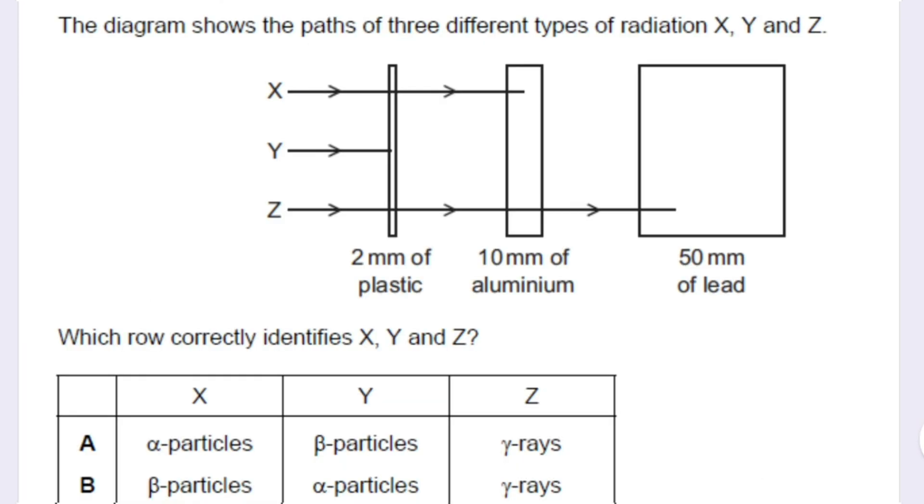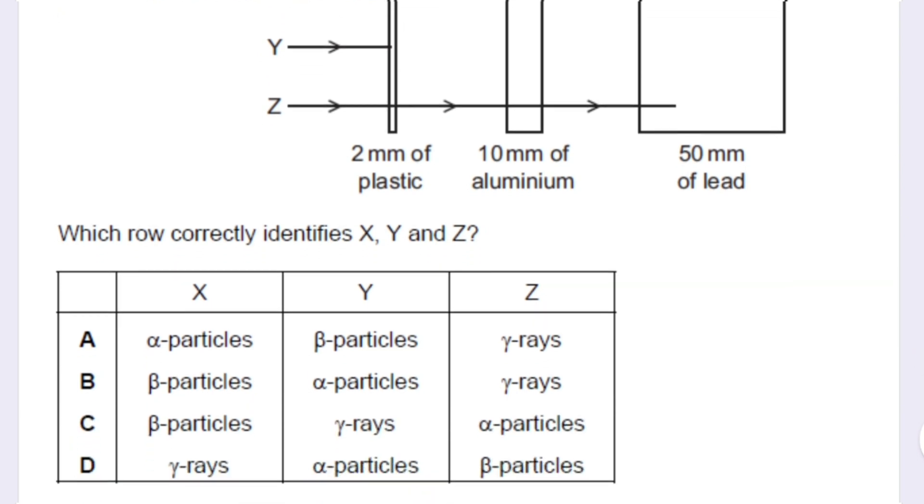This question is also related to penetration power. The diagram shows the paths of three different types of radiation, X, Y, and Z. Which row correctly identifies X, Y, and Z? If you look at the penetration power, X reaches till 10 mm of aluminum, Y is stopped at 2 mm of plastic, and Z reaches till 50 mm of lead. So definitely Z is gamma, Y is alpha, and X is beta. The correct answer is B.